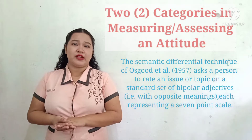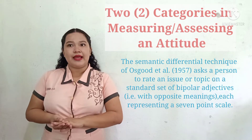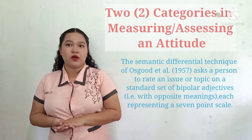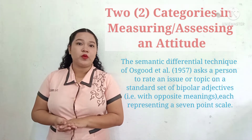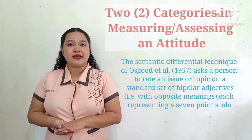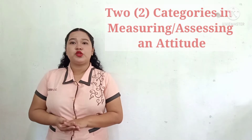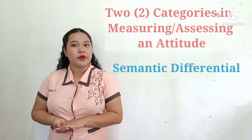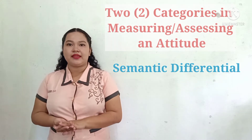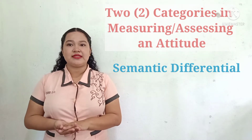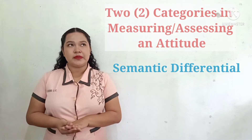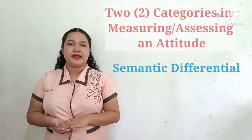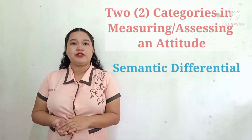The semantic differential technique of Osgood et al. asks a person to rate an issue or topic on a standard set of bipolar adjectives, each representing a seven-point scale. To prepare a semantic differential scale, you must first think of words with opposite meanings that are applicable to describing the subject of a test. For example, participants are given a word such as "car" and represented with a variety of adjectives to describe it.